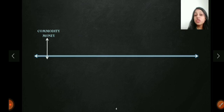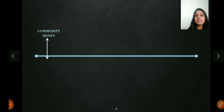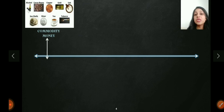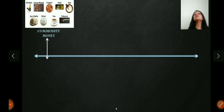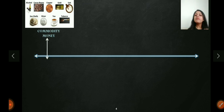The first form is called commodity money. Commodity money is the money that used to exist in the barter system — we used commodities as a medium of exchange and a measure of value. A person's wealth was measured by how many cows they had, for example. So that was commodity money, used in the times of the barter system.